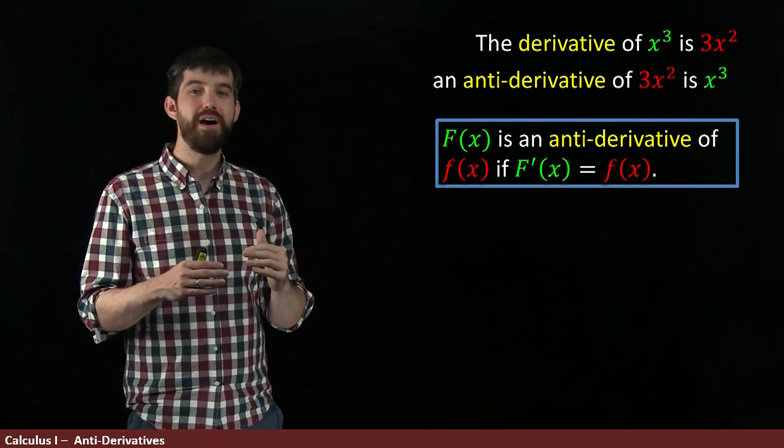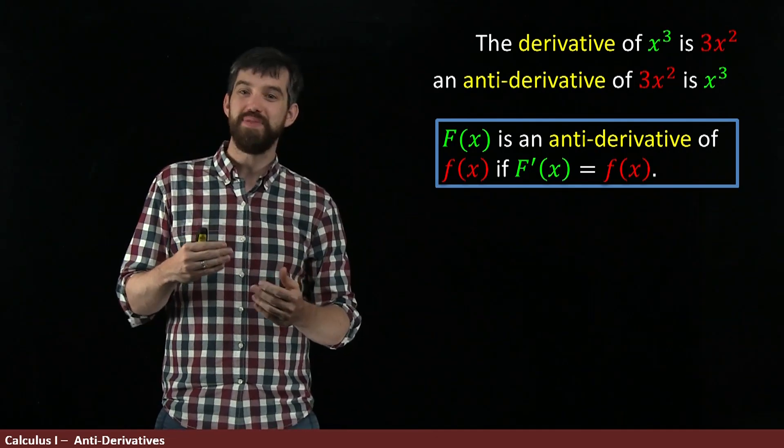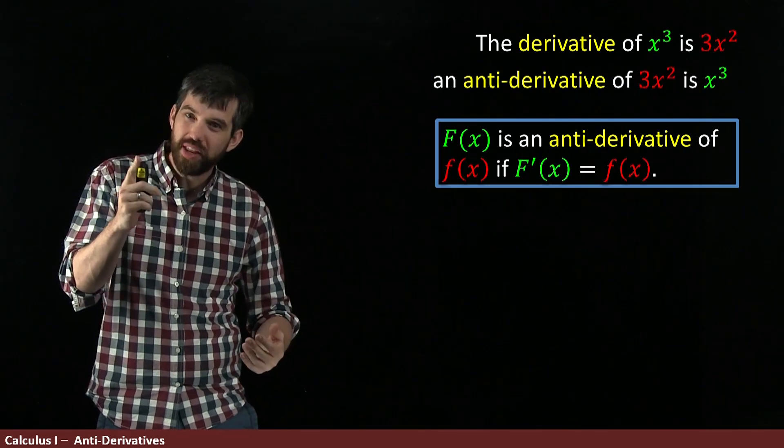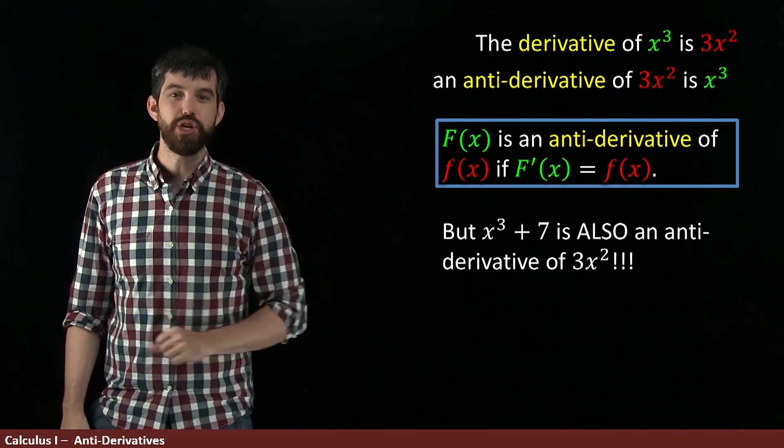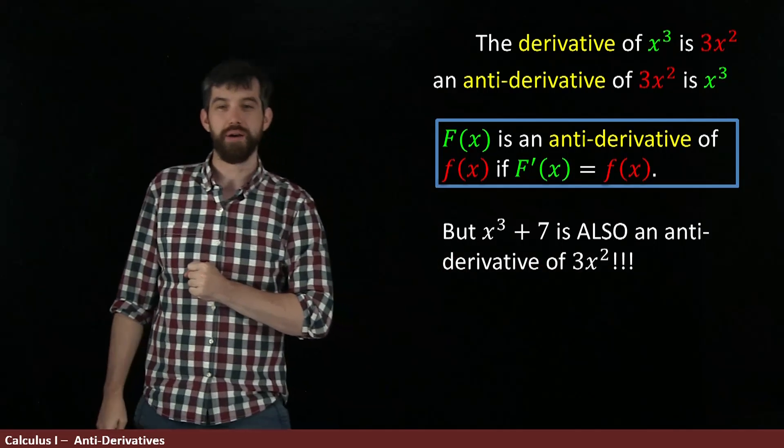Now, any time that you have a function and you take its derivative, the function is going to be the antiderivative of the derivative. But it turns out that there's not only one of these things. For instance, look at this function x cubed plus 7. It's also an antiderivative of 3x squared.